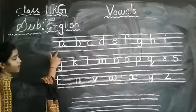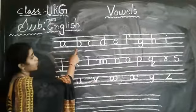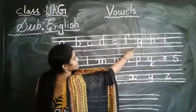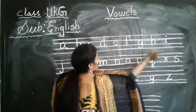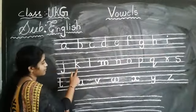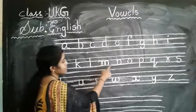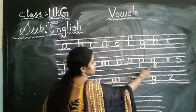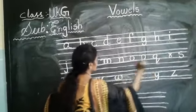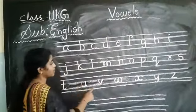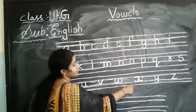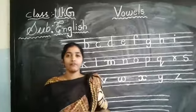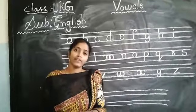1, 2, 3, 4, 5, 6, 7, 8, 9, 10, 11, 12, 13, 14, 15, 16, 17, 18, 19, 20, 21, 22, 23, 24, 25. So total, how many do we have? 26 letters.